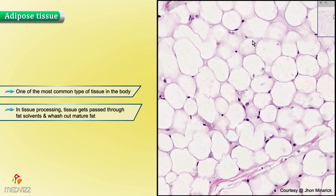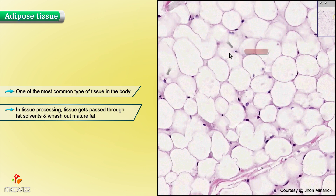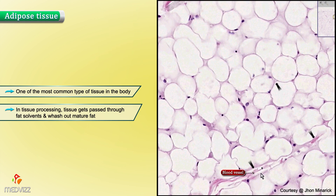So that's probably an adipocyte nucleus, that probably is, and that could very well be. Perhaps that's a lymphocyte, or another round cell like a macrophage — you really can't tell just from H&E stain. Don't forget you may have some collagen fibers here and there, and blood vessels like we see here, where we can definitely see red cells within the vessels.